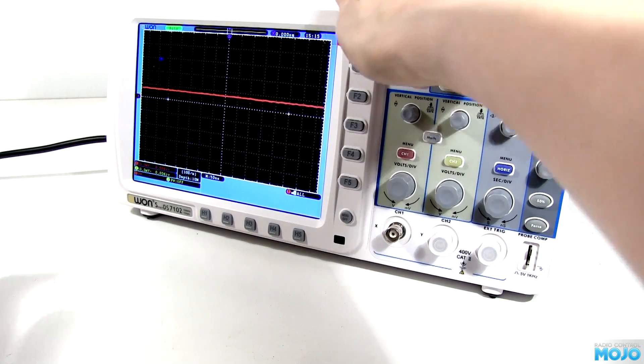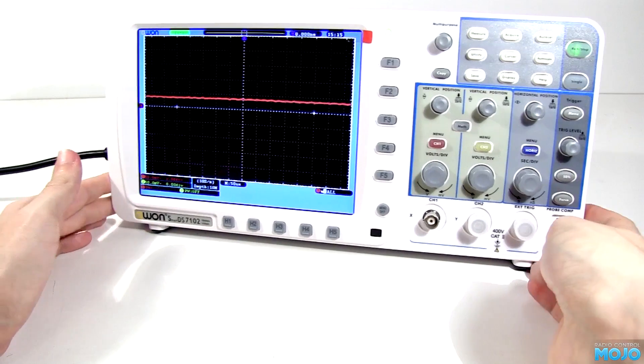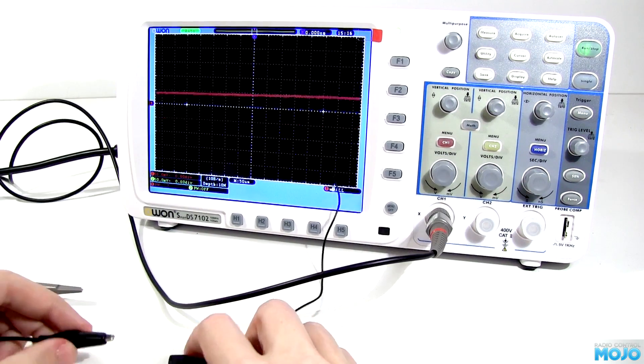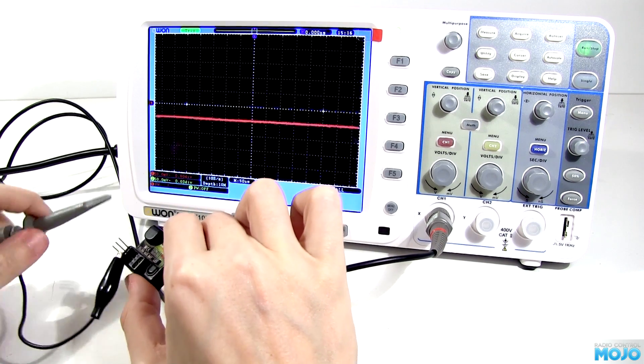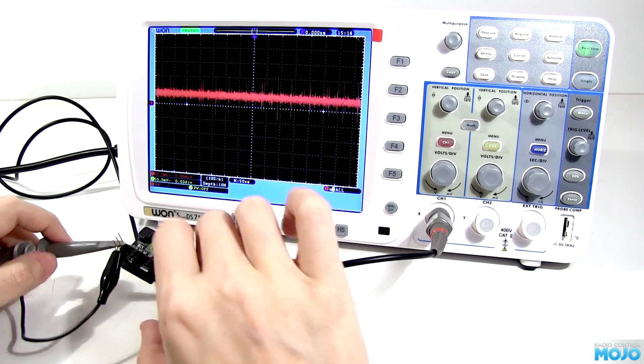So we need a bigger piece of kit, an oscilloscope. Just as before, the ground on the servo connection goes to the ground on the scope. The probe goes to the signal pin.